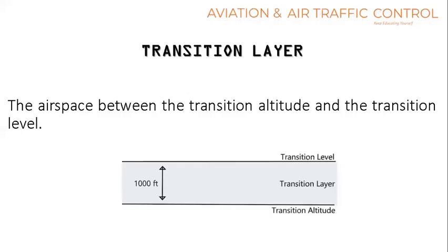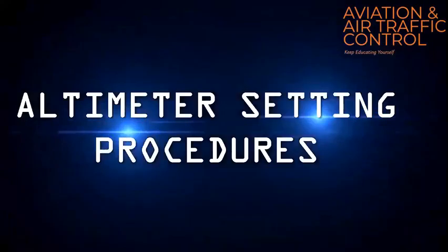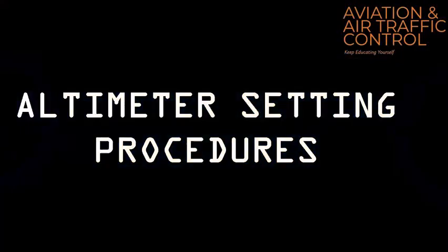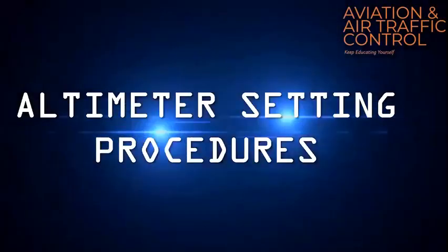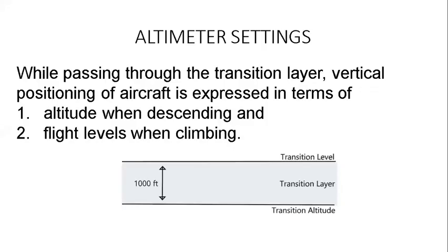The airspace between transition altitude and transition level is the transition layer. We will now discuss the altimeter setting procedures while passing through the transition layer.